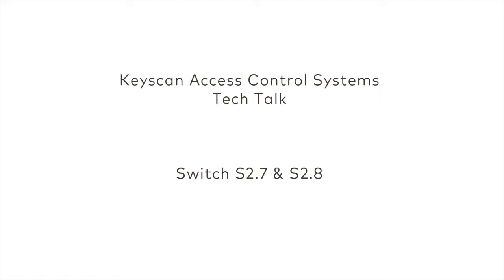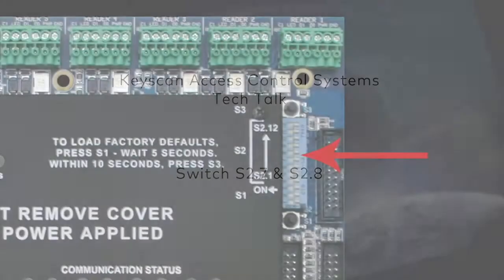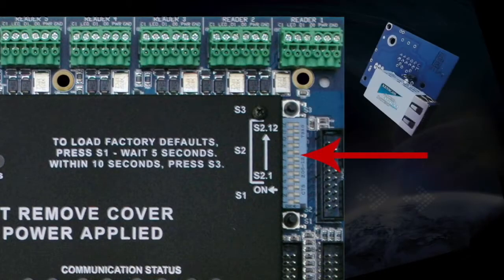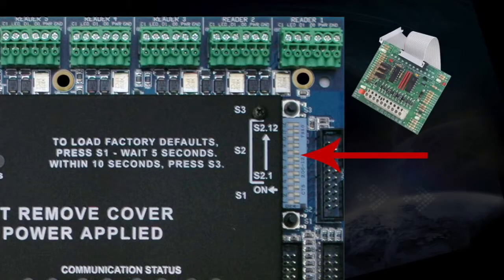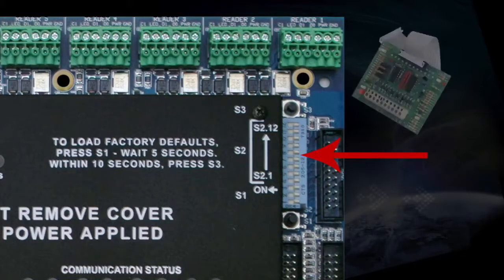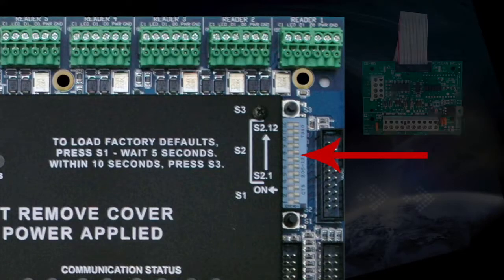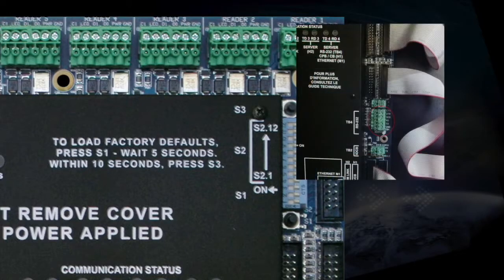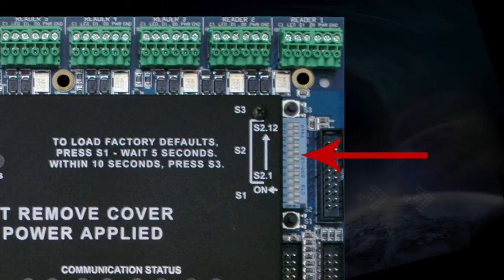Switch 7 and 8 are used to select your communication connection for access control units. You can select between RS-232, NETCOM 2P, CPB10-2, or CB485 options. When retrofitting an access control unit, you will need to change the settings to a CPB10-2 or CB485 option. The default option has both switches 7 and 8 turned off, which selects the RS-232 connection to the control panel. You will need to choose the required method of connection for communications to your control unit as needed.